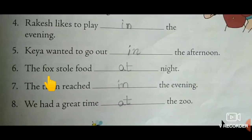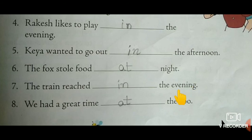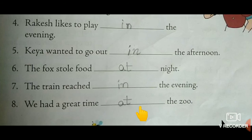The fox stole food at night. Next: the train reached in the evening — daytime. We had a great time at the zoo. Before a particular place, children, we use 'at' — for example, at school, at the hospital, at the temple.